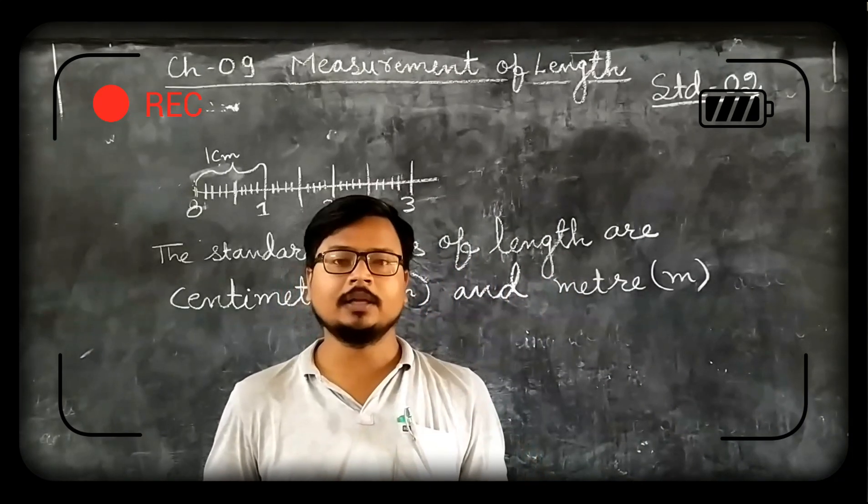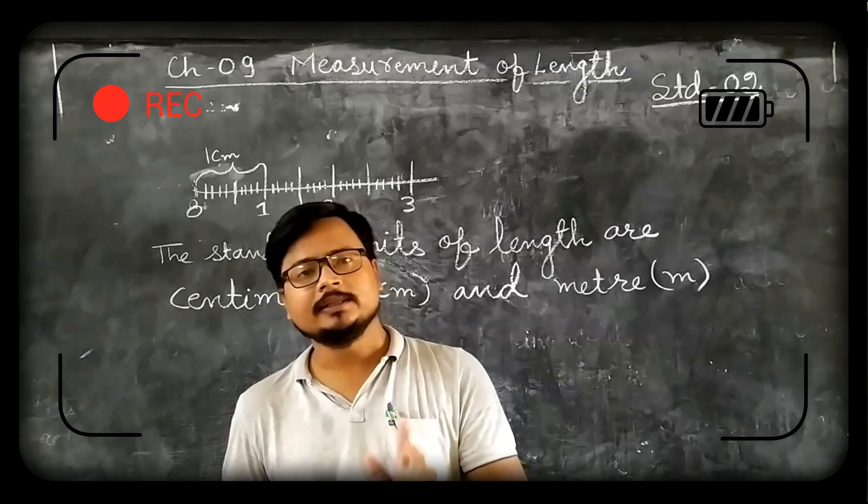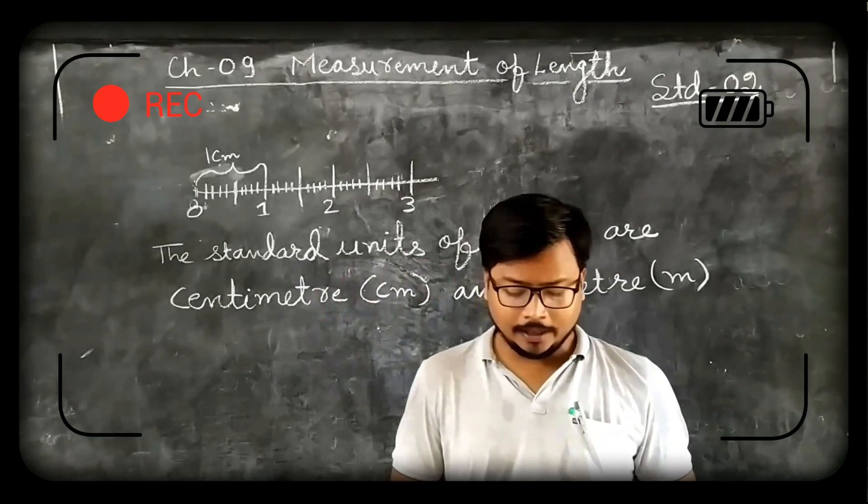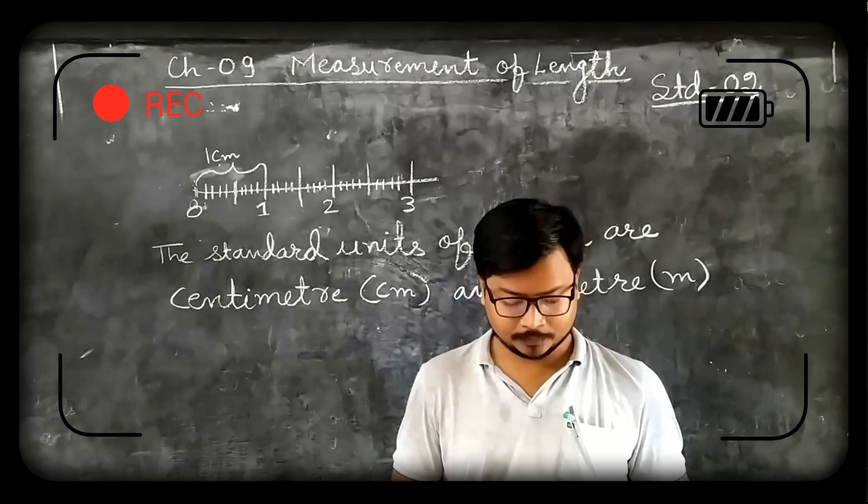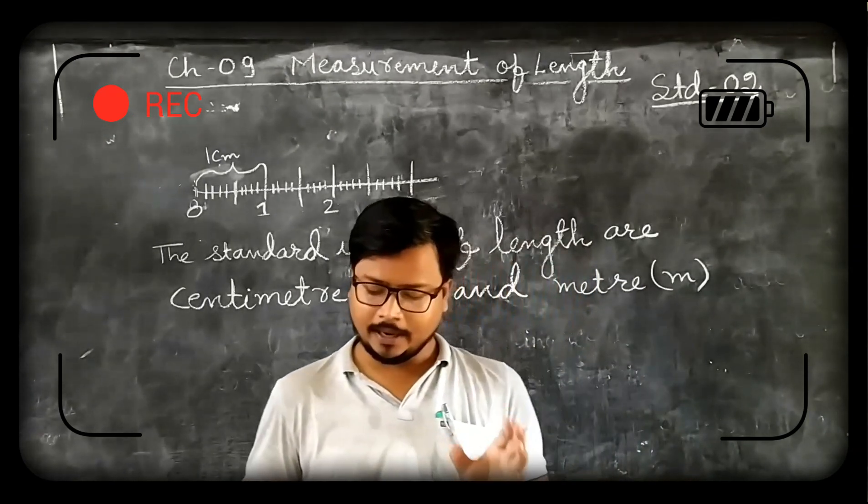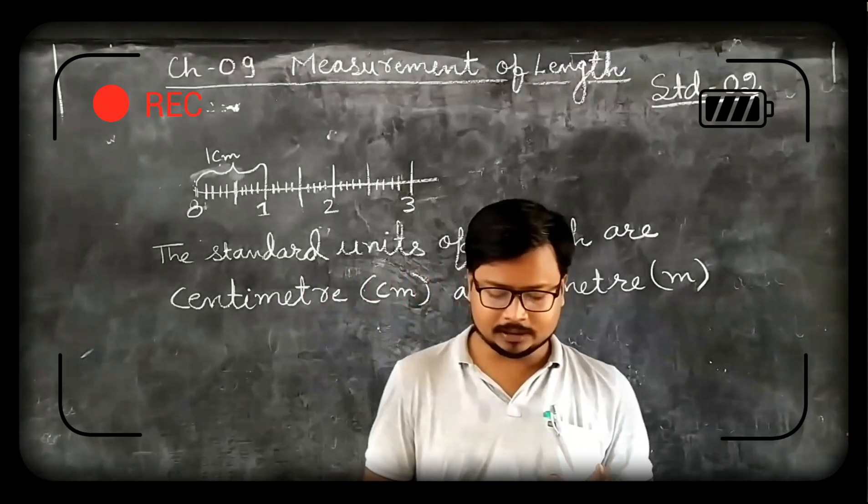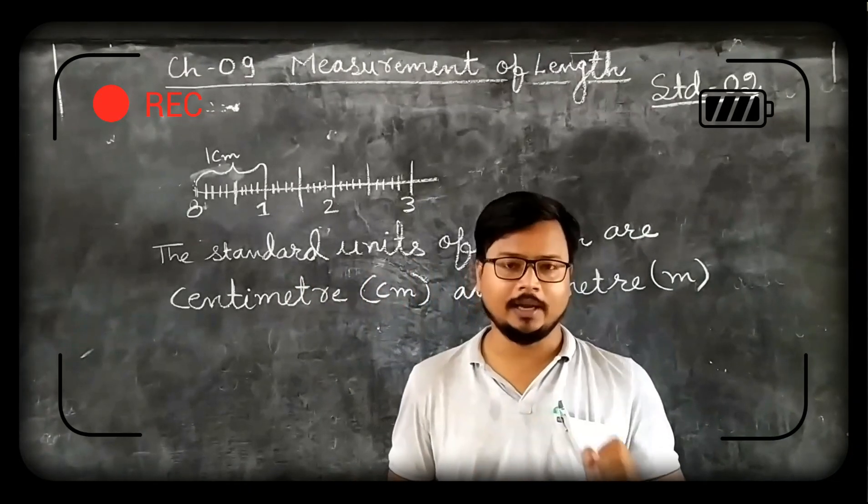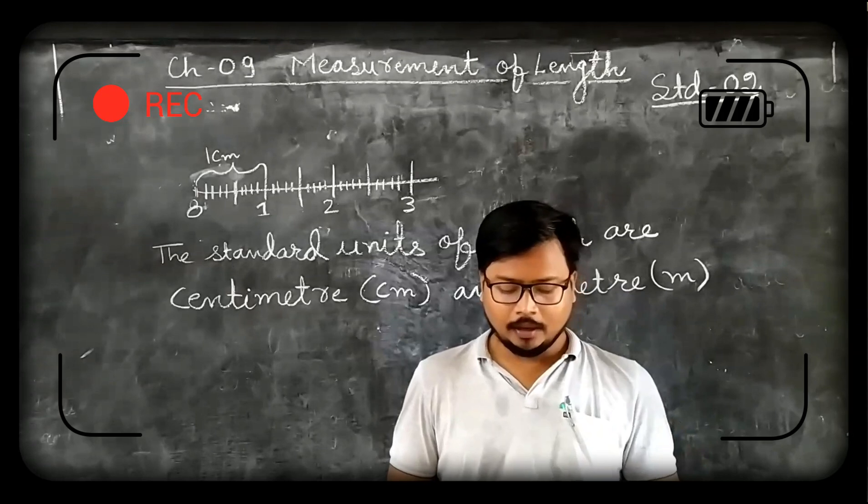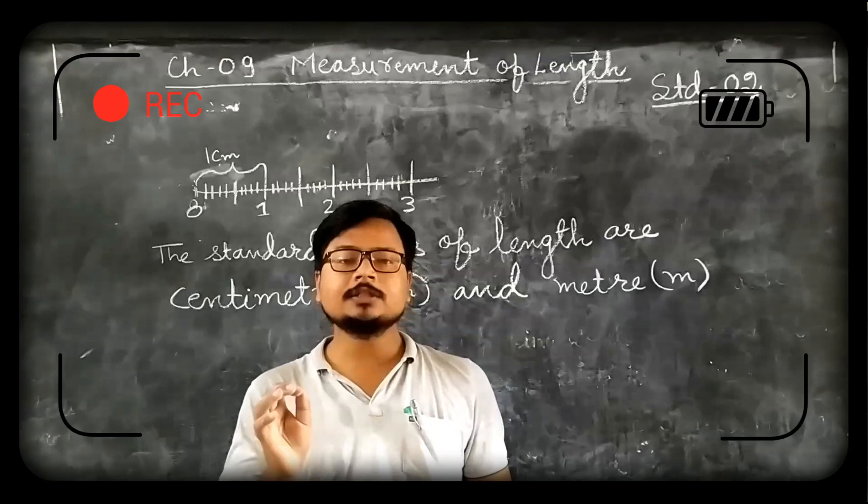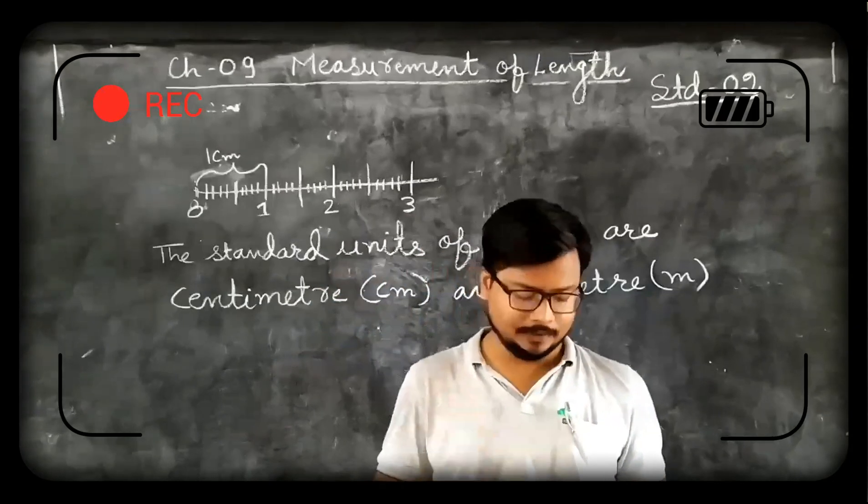His father measured the height with his hand span and Rahul's height becomes 8 hand span. Rahul's height is 14 hand span with his hand and 8 hand span with his father's hand. Why? Because Rahul's hand is smaller than his father's hand, which is not a correct measurement.